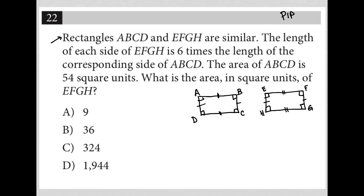Okay, and what else do we know? The length of each side of EFGH is six times the length of the corresponding side of ABCD.